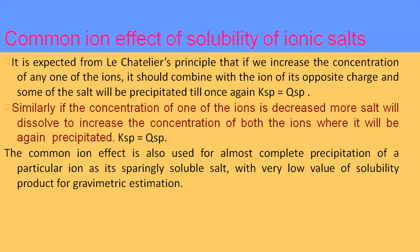Similarly, if the concentration of one ion is decreased, more salt will dissolve to increase the concentration of both ions until Ksp equals Qsp again. Removing positive or negative ions disturbs the ionic concentration, requiring more salt to dissolve. The common ion effect is also used for almost complete precipitation of a particular ion as a sparingly soluble salt with low Ksp, used in gravimetric estimation.